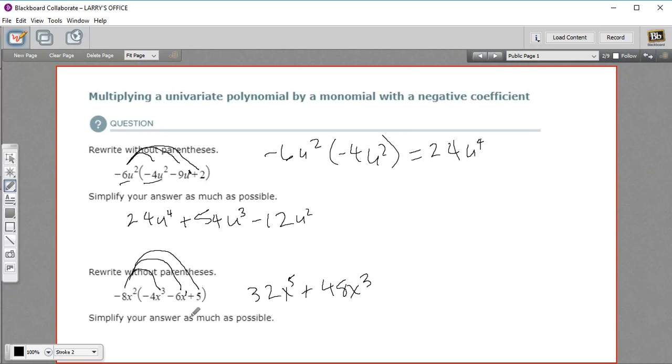And finally, negative 8x squared times 5. That's a negative 40x squared. So that is how to multiply a monomial by a trinomial.